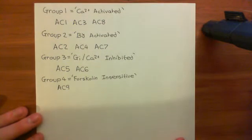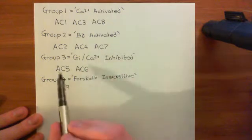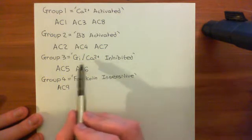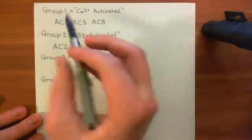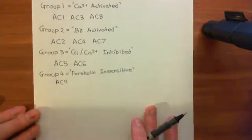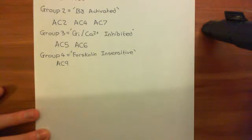The alpha-I GTP subunit can interact with groups 1 and 3. It's obvious it interacts with group 3 because the group name tells us that, but it's less obvious that it interacts with group 1. We'll begin with group 1 because it's the more complicated case. Basically, the alpha-I GTP subunit can bind to group 1 adenylyl cyclases; however, it does not cause inhibition of them. Instead, it blocks the activation of them by calcium.